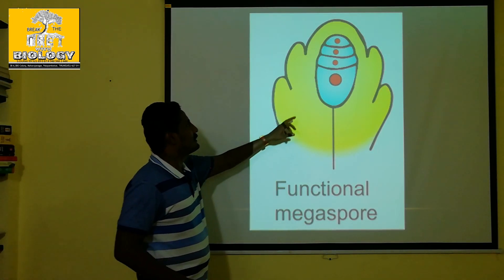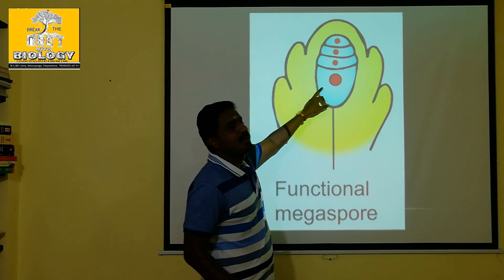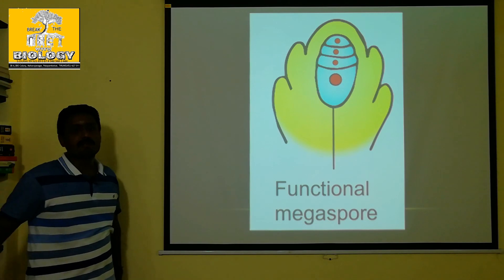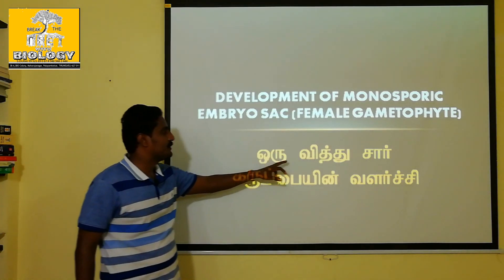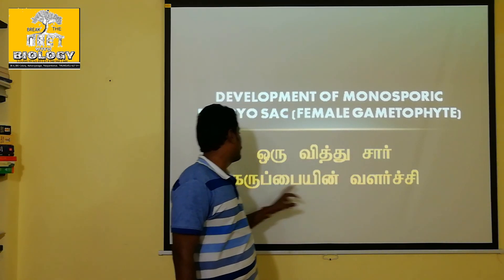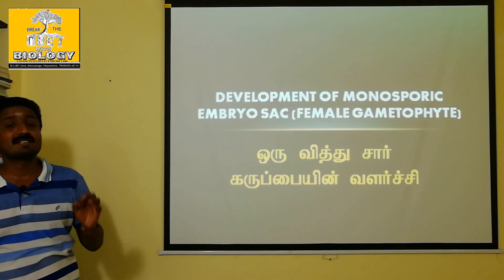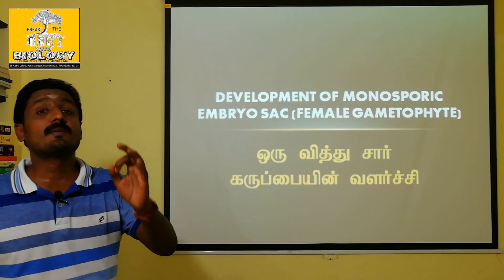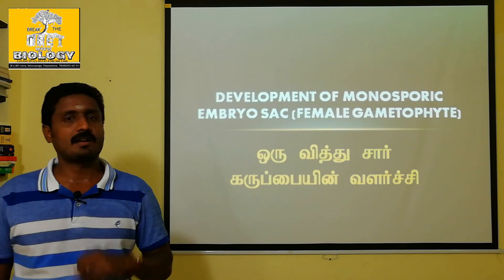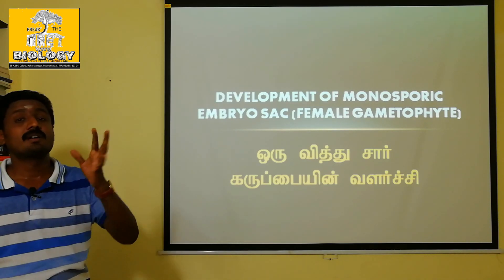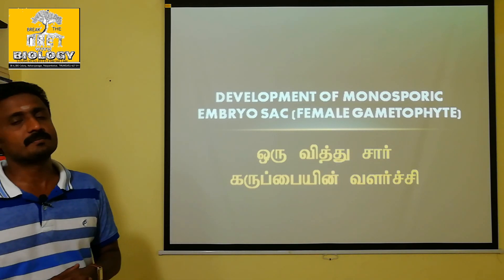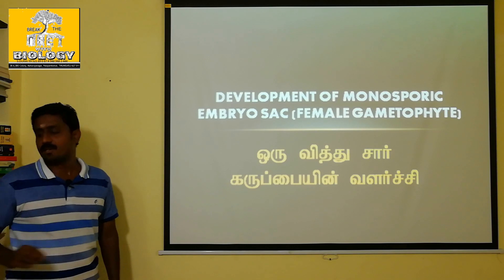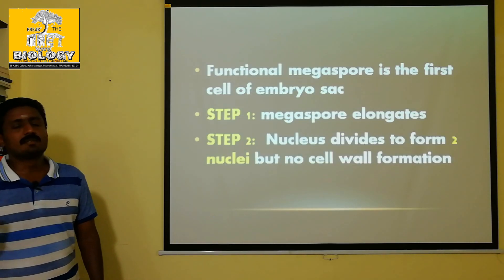There are 4 cells that are developed — 1 megaspore, 1 megaspore, 1 megaspore. This is an example of Polygonum type. Polygonum is a type of embryo sac development. This is a type of female gametophyte and embryo sac development. Now there are 5 steps here.